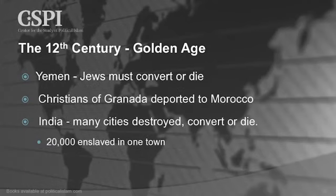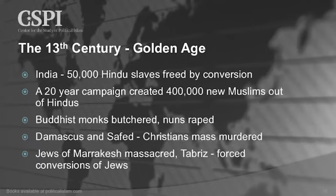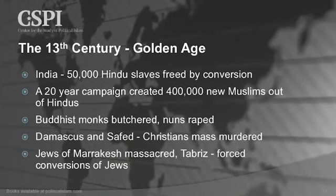In Yemen, the persecution of Jews continues — they're given the order: convert or die. The Christians of Granada are deported to Morocco. In India, many cities are destroyed under the order convert or die, and 20,000 Hindu slaves were taken in one town. Then 50,000 Hindu slaves are freed by conversion. Islam has a doctrine of slavery viewed as beneficial to Allah — about the only way a slave can gain freedom is to convert to Islam. A 20-year campaign created 400,000 new Muslims out of Hindus.